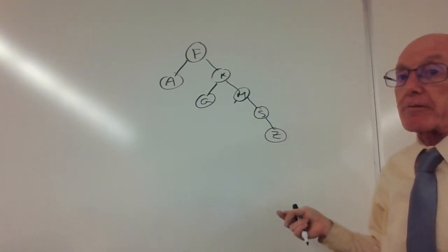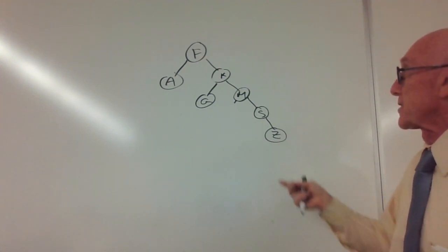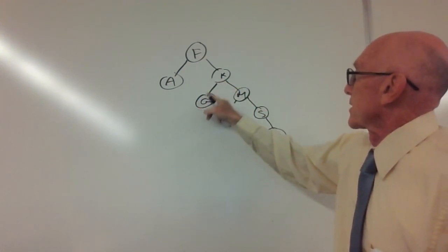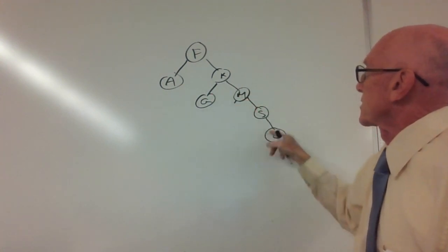And by the way, our binary tree search tree property still holds. G is to the left of K, and M, S, and Z are to the right.